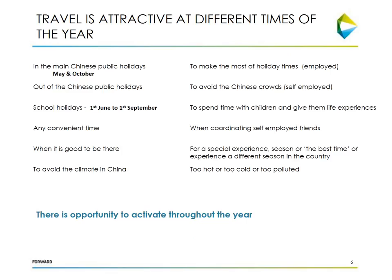This slide summarizes the May to October period. During that time it's public holidays, and people will take advantage of those. School holidays run from June to September — a great time for parents to spend time with their children. People who are employed generally try to organize holidays around national holidays, but those who are self-employed — and some people even stop their employment to travel — have much more flexibility.